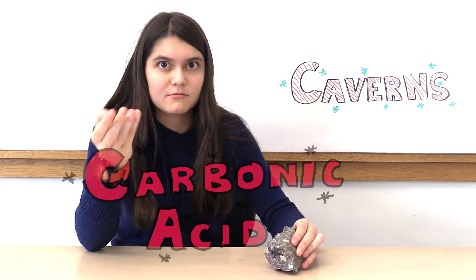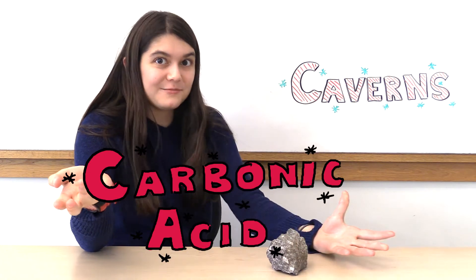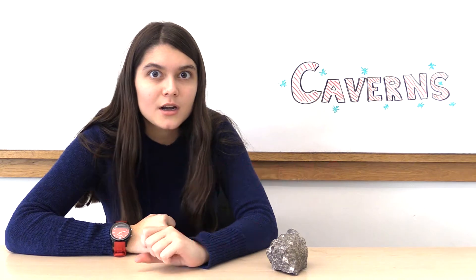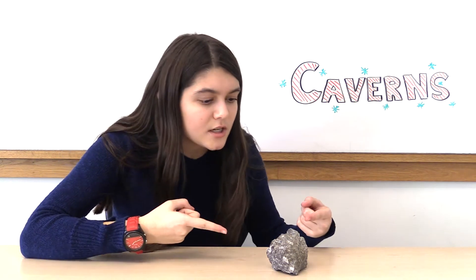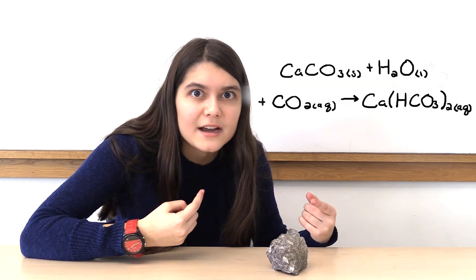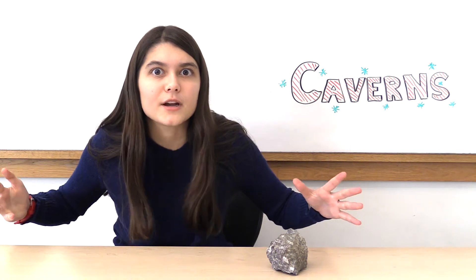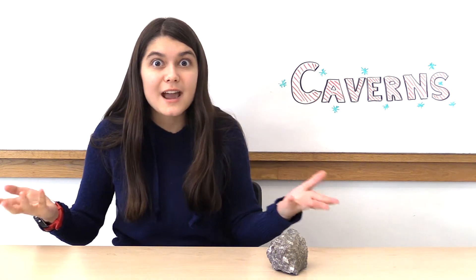Chemical weathering involves changing the composition of a rock. But you need one more ingredient: carbonic acid. You're in luck — rainwater already has it by dissolving carbon dioxide from the atmosphere. Carbonic acid is a weak acid, but that doesn't mean it can't do some serious damage. As soon as it touches limestone, it begins to react, creating calcium bicarbonate. The water follows lines of weakness in the rock — essentially, it will find a crack and make it even bigger. After thousands of years, a cavern is formed.